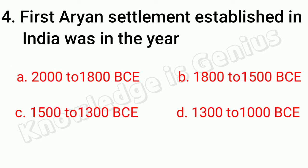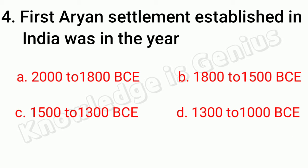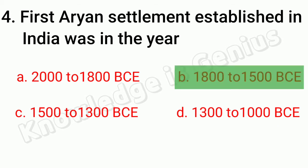First Aryan settlement established in India was in the year: A. 2000-1800 BC. B. 1800-2500 BC. C. 1500-2300 BC. D. 1300-2000 BC. And the answer is B. 1800-2500 BC.